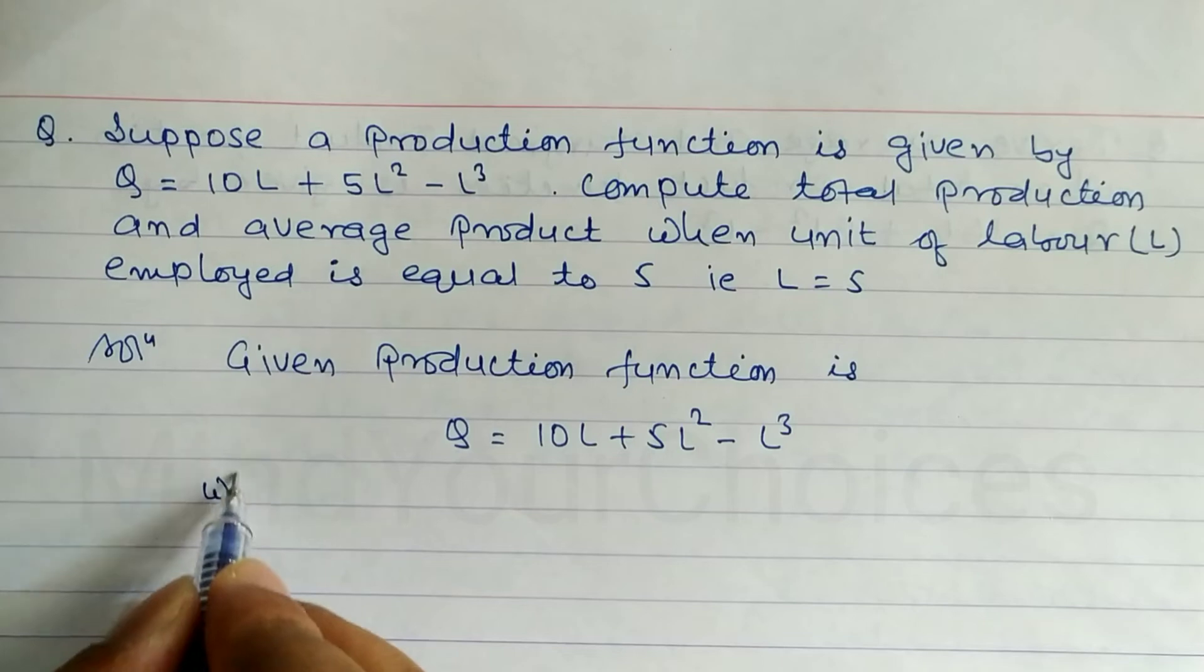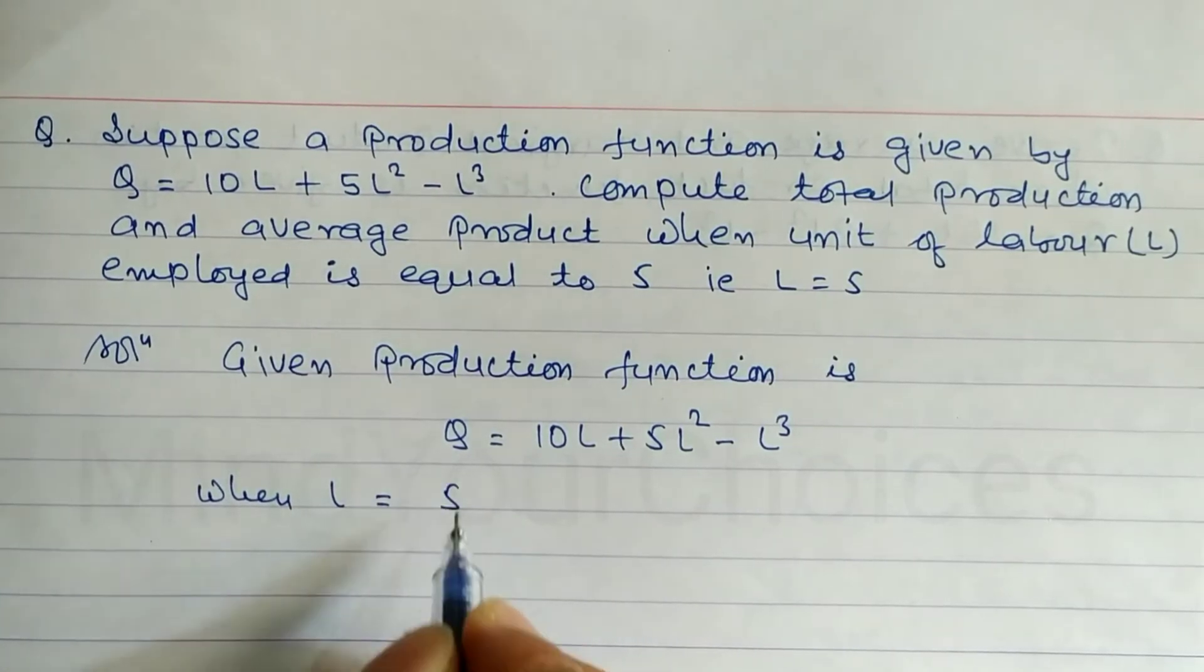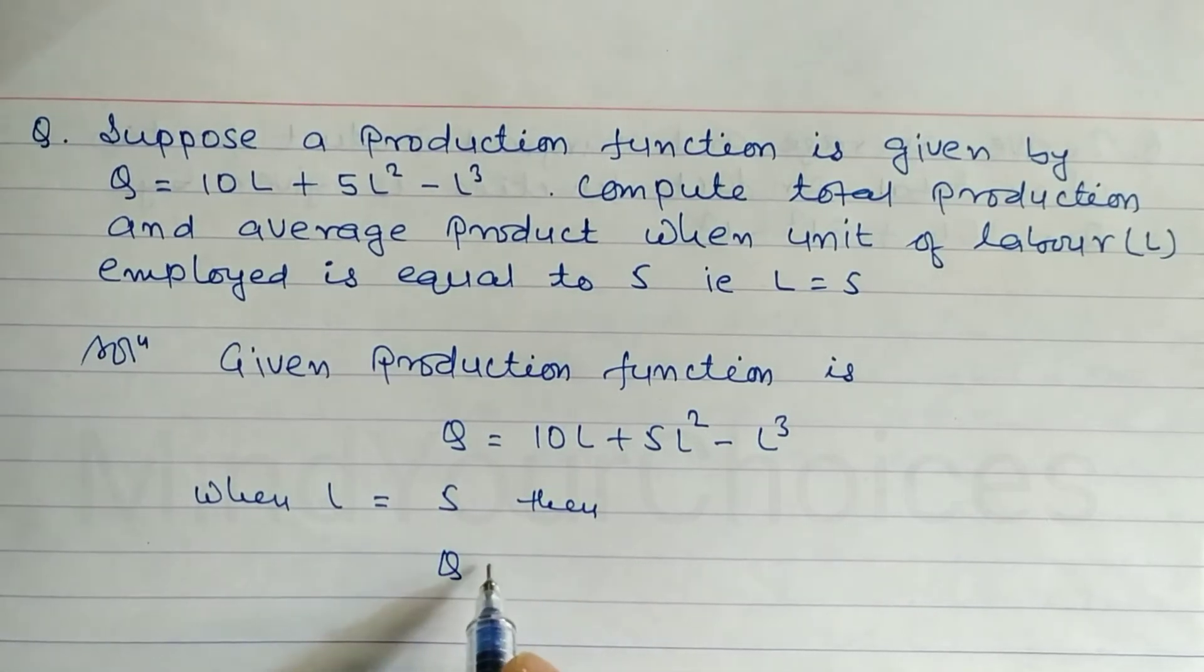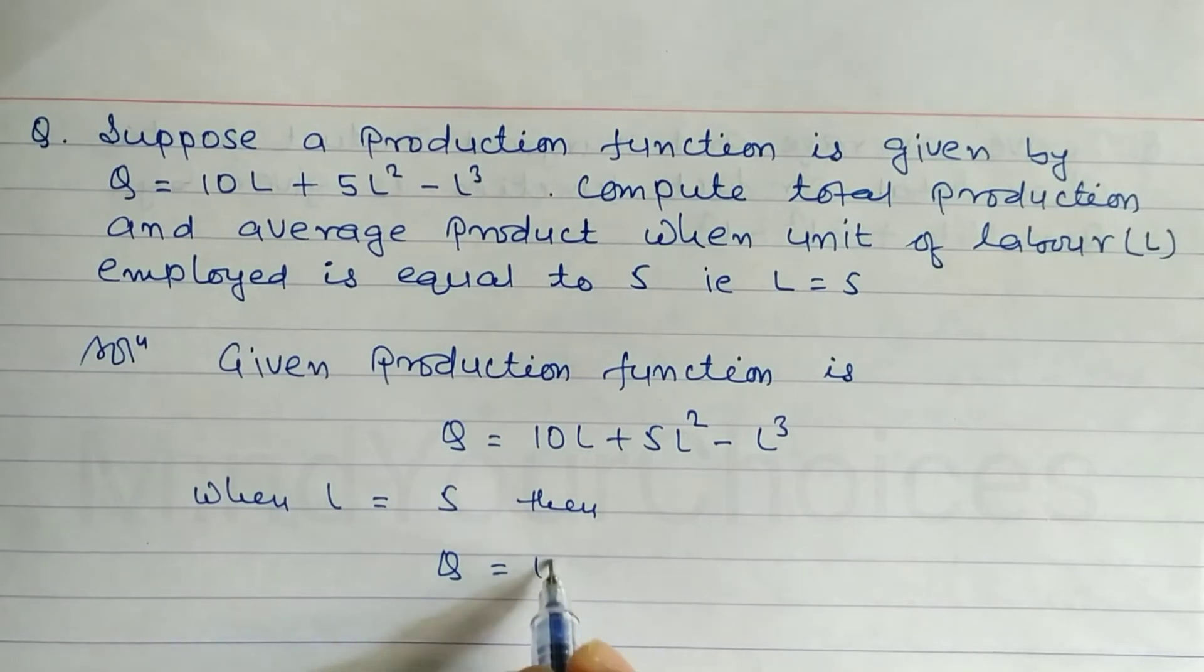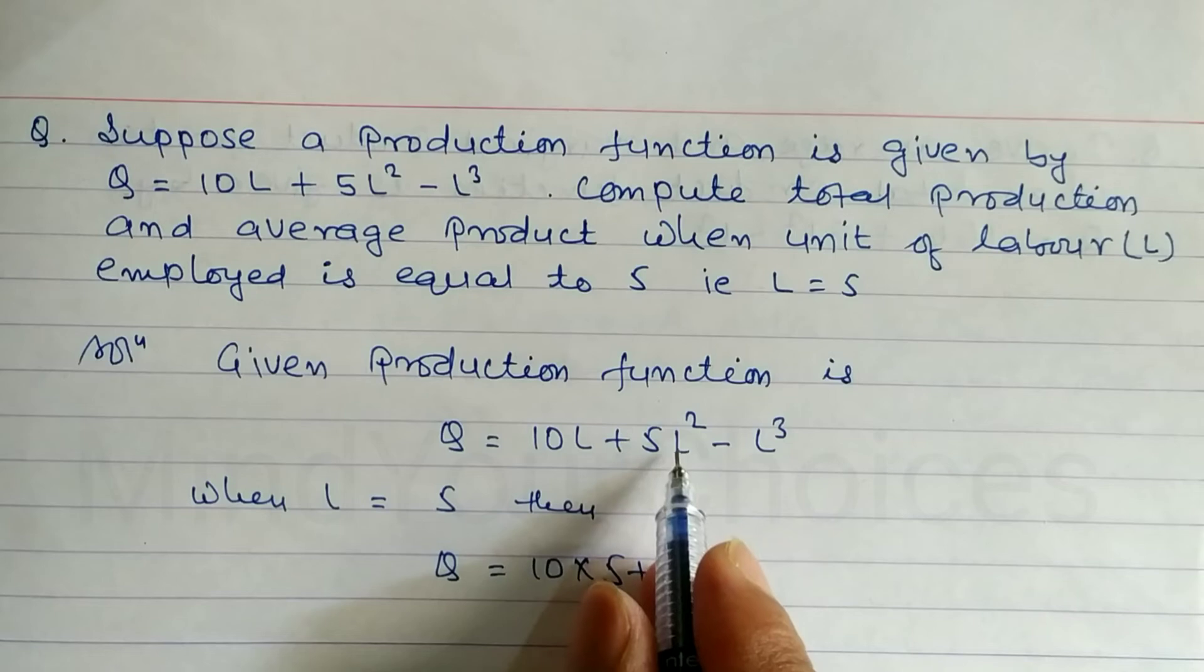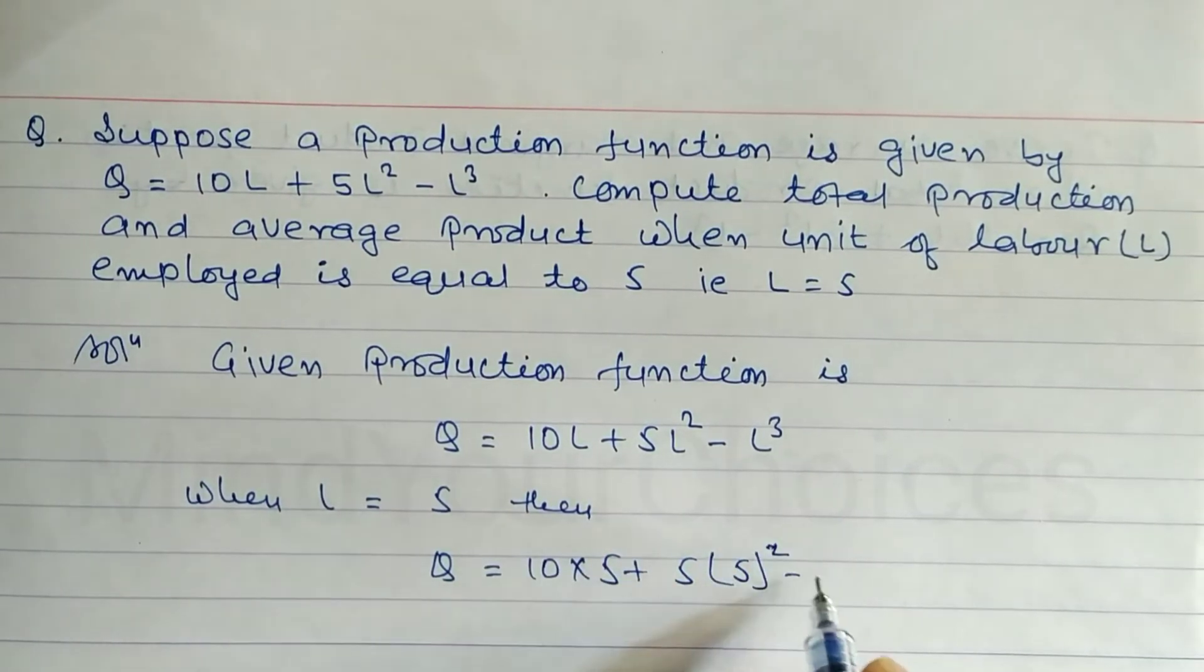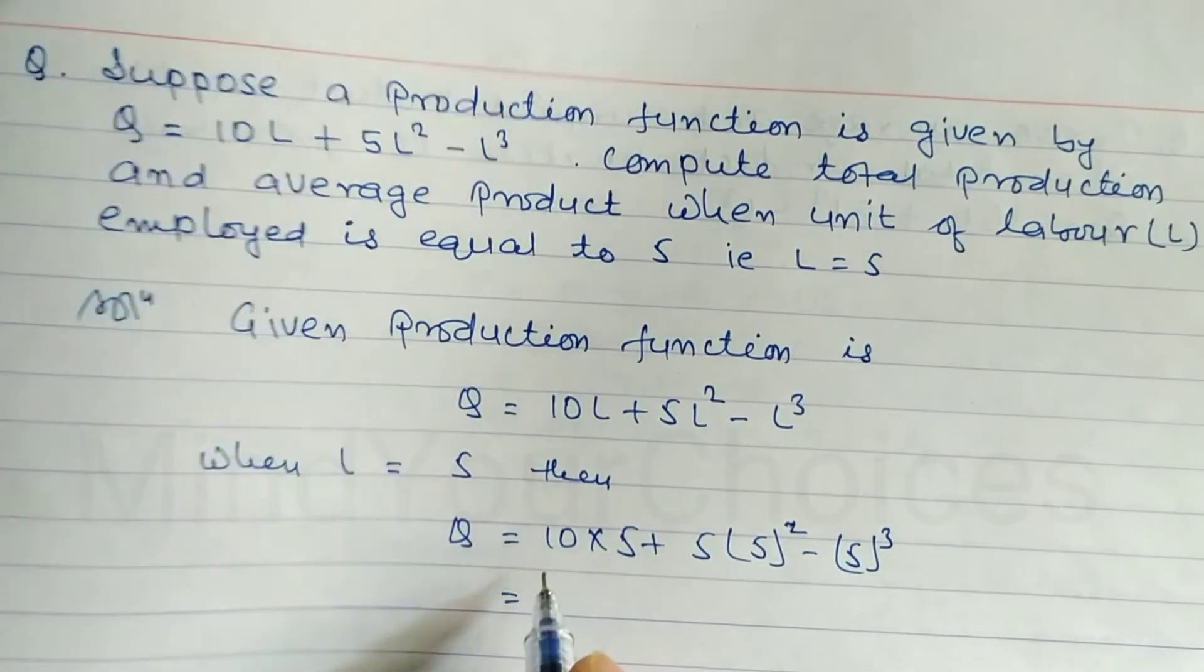When L is equal to 5, what is the value of Q? The total production function Q equals, substituting L = 5: Q = 10(5) + 5(5)² - (5)³. Now let's calculate: 10 times 5 is 50.